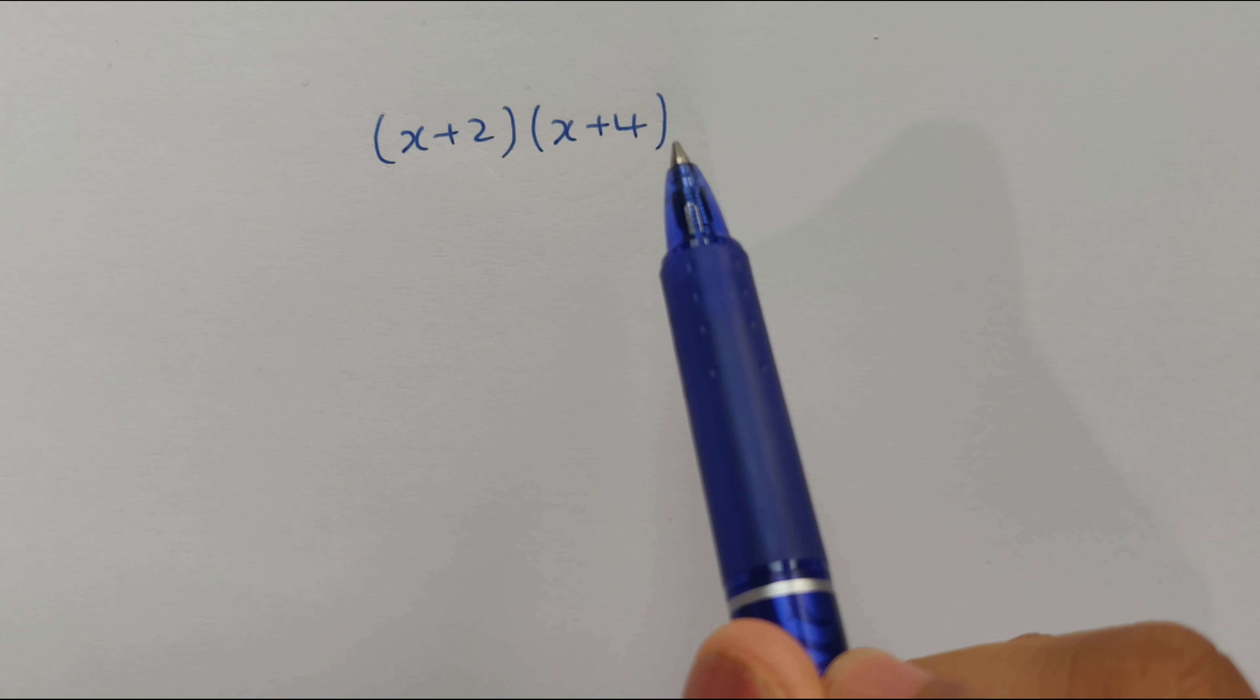So, first, x multiplied by x is x squared. Then we go x multiplied by 4, which is 4x. Then we go 2 multiplied by x, which is 2x. Then plus 2 multiplied by 4, which is 8.